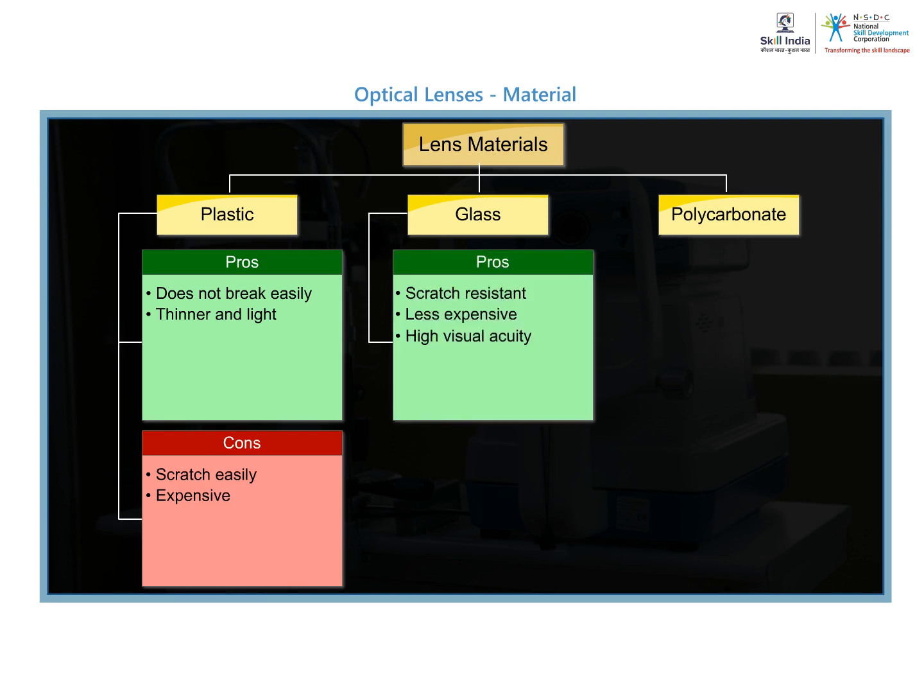Glass is the most commonly used material in spectacle lenses. Glass lenses are scratch resistant and less expensive. They also provide very high clarity and visual acuity.